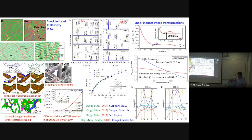We also detailed the transition pathway — it does not follow a classical martensitic transformation but a different path. We discussed which path it takes when moving from FCC to the BCC/BCT structure. This BCC/BCT phase can also be grown in copper via molecular beam epitaxy on substrates like platinum, but that is a different phenomenon from the shock-induced transition.